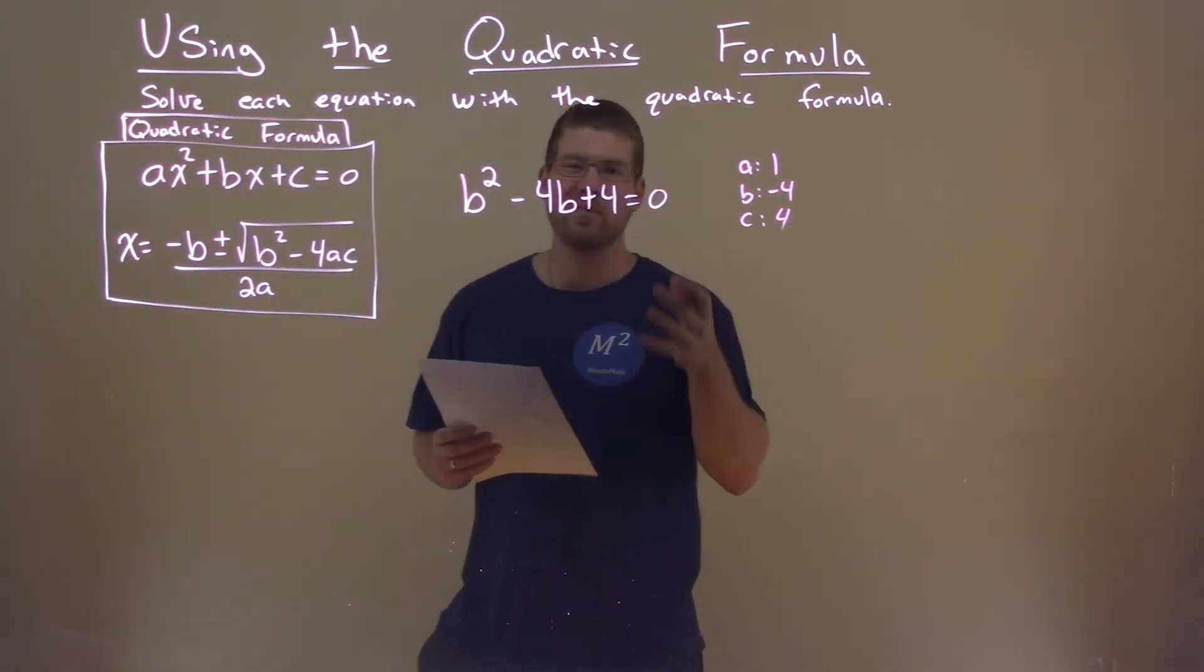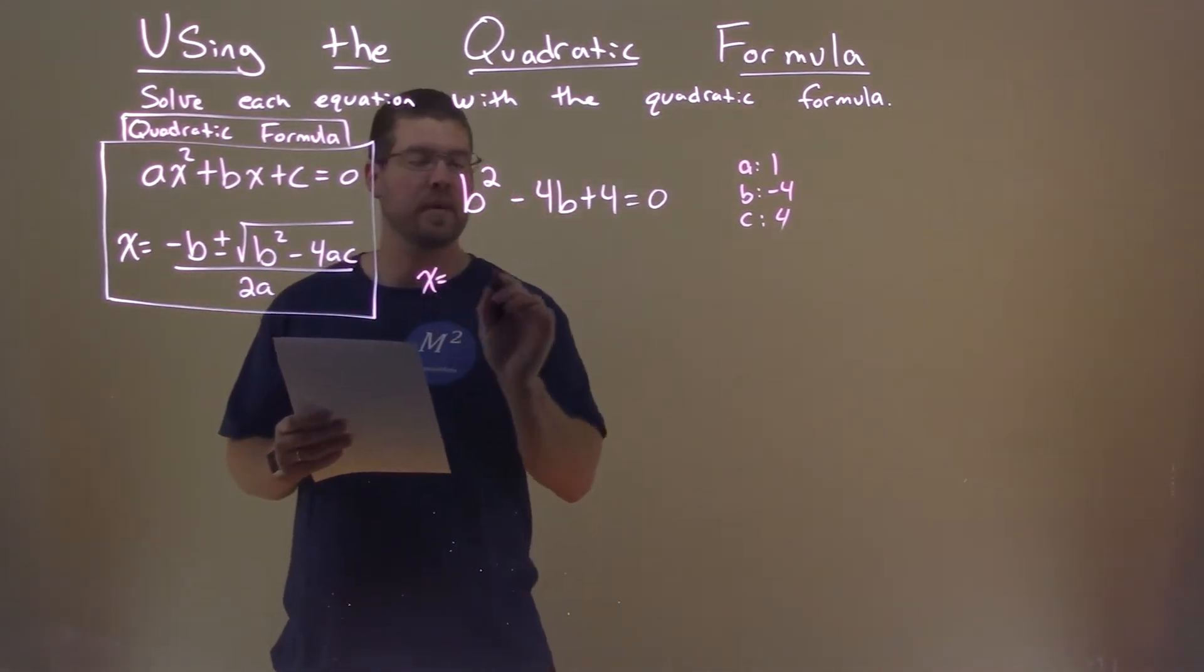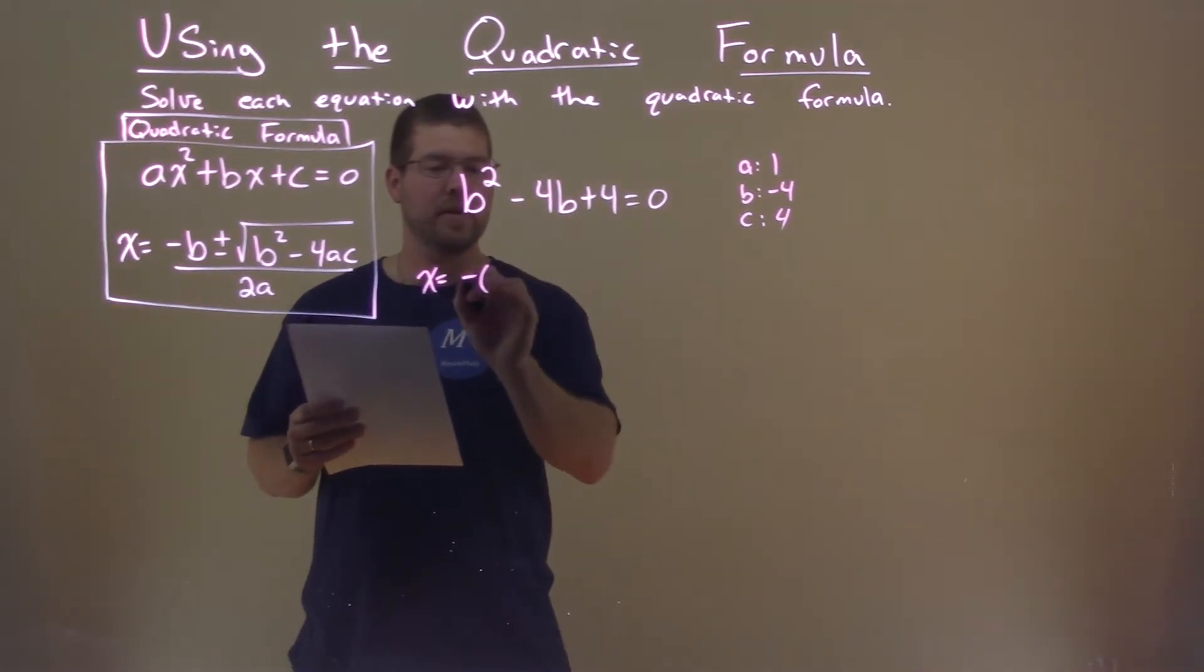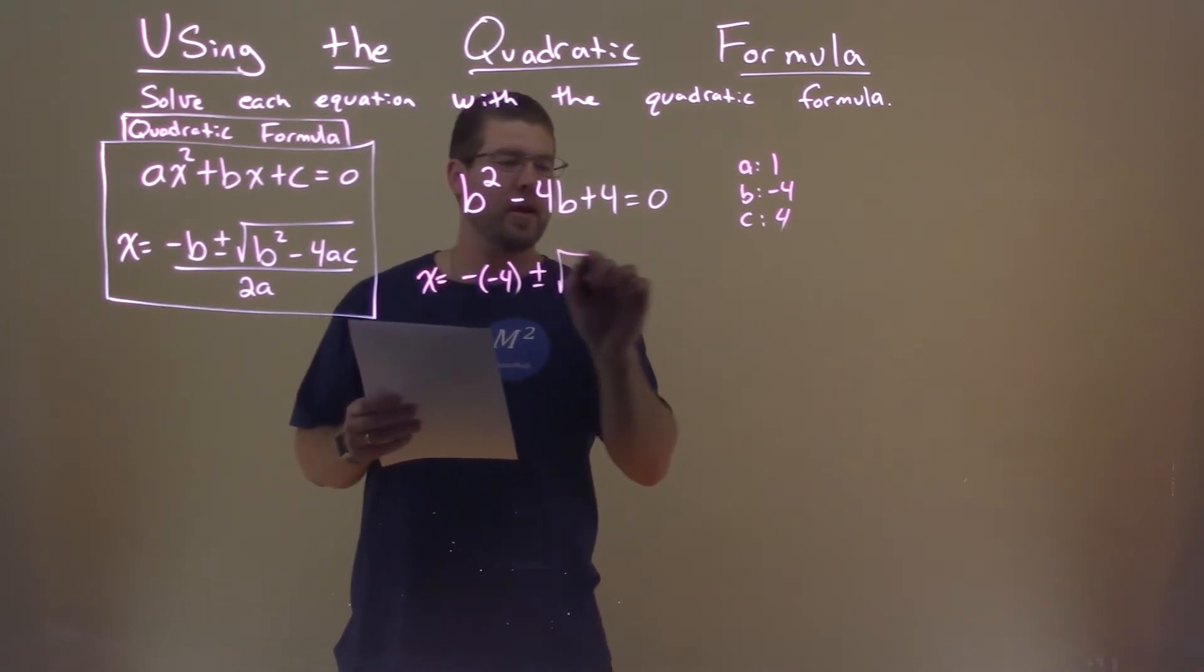Now that we have those pieces, we just plug it into the quadratic formula. x equals negative b, so negative, and then b is a negative number, two negatives, plus or minus the square root,